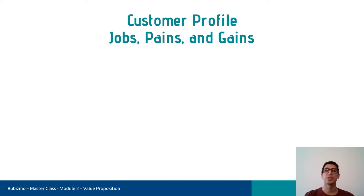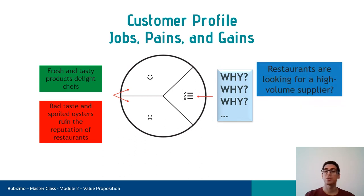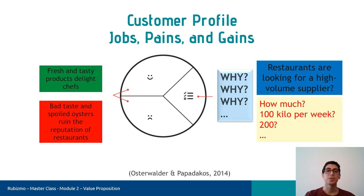All right. Now that you're familiar with the customer profile, let me give you two important tips here. First of all, we have to put the same ideas in the pains and gains as opposite of each other. For example, I have put fresh and tasty products delight chefs in the gains, and bad taste and spoiled oysters ruin the reputation of restaurants in the pains. In addition, we have to ask why several times to understand the customer's real motivations. When it comes to restaurants are looking for a high volume supplier, the company owner should ask how many kilos per week can satisfy the restaurants. 100 kilos, 200 kilos, and so on.